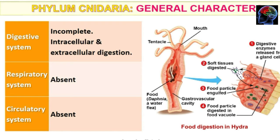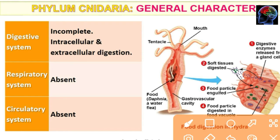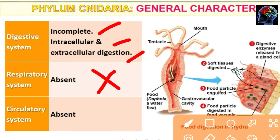Next we will talk about the digestive system. The digestive system is incomplete. It involves both intracellular and extracellular digestion. The respiratory system is absent and the circulatory system is also absent in Phylum Cnidaria.